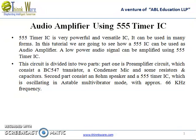This circuit is divided into two parts. Part 1 is the pre-amplifier circuit which consists of a BC547 transistor, a condenser mic, and some resistors and capacitors. The second part consists of an 8 ohm speaker and a 555 timer IC which is oscillating in astable multivibrator mode with approximately 66 kHz frequency.